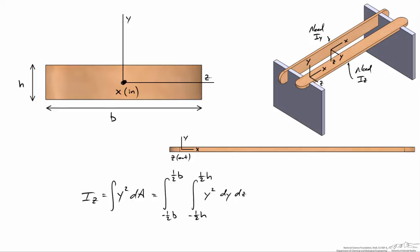Note the dimensions or units of Iz. We'll have something like inch squared for y squared, and dy has dimensions of inch, and dz also has dimensions of inches, so we'll get dimensions or units of inches to the fourth, or typically we'll see millimeters to the fourth.